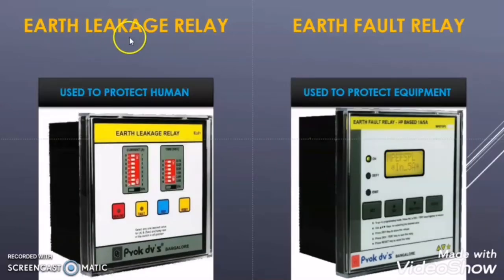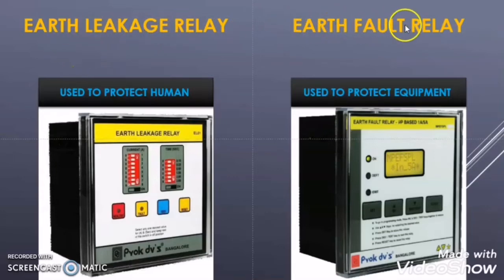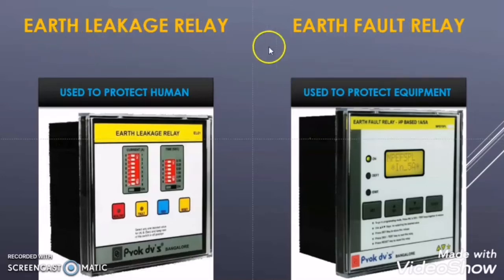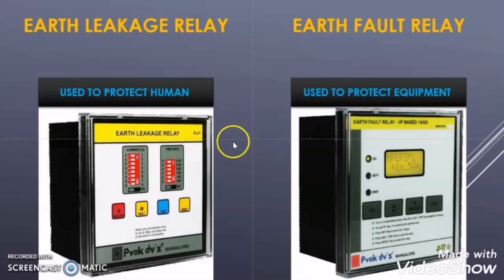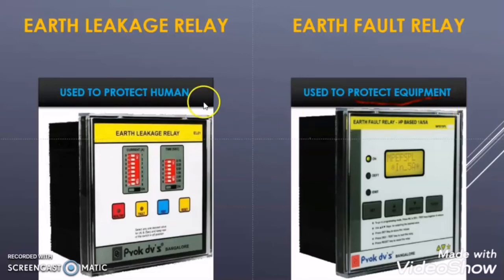I believe now you are well aware of the difference between earth leakage fault and earth fault. If you didn't watch my video on that topic, then watch that video and come back. The first difference is that the earth leakage relay is used to protect the human from earth leakage current shock, but the earth fault relay is used to protect the equipment — not the human — from the earth fault condition.